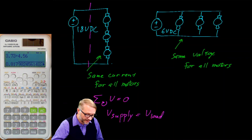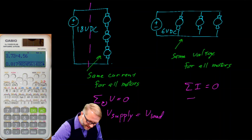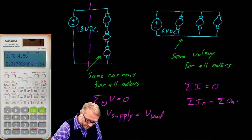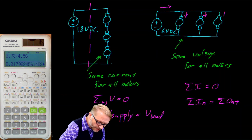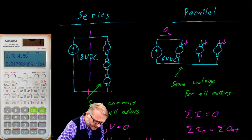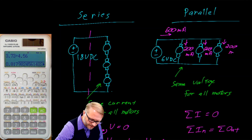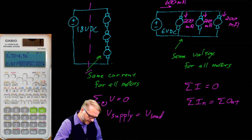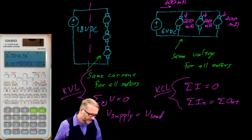For the parallel circuit, the summation of the currents is equal to zero — the goes-in-to's got to equal the goes-out-of's. In this circuit, about 600 milliamps going in equaled the current going out: 200 milliamps per motor, three motors. We covered this property being Kirchhoff's voltage law and Kirchhoff's current law — KVL and KCL.